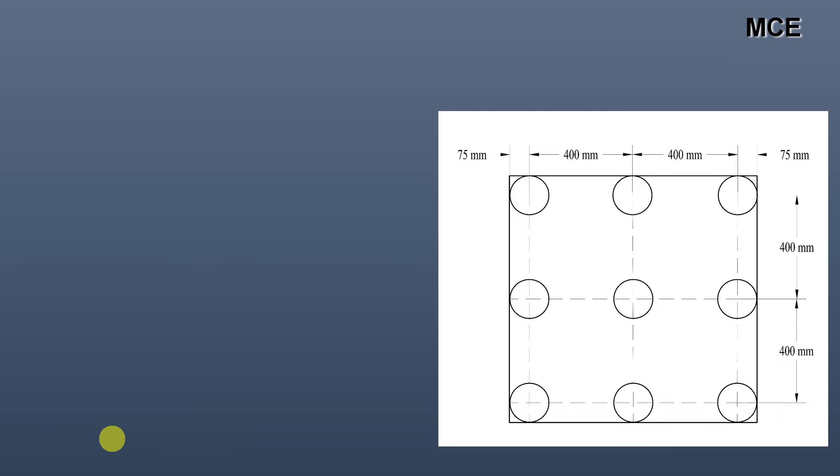Now we will find the ultimate load capacity based on the group action. For this I have drawn the drawing of this pile group. We have the center to center spacing of 400 mm. There are 9 piles which are arranged in square pattern, so you can see 3 piles on each side.